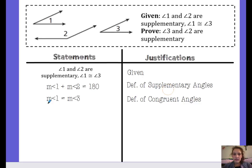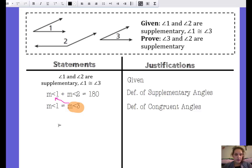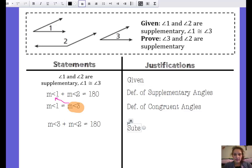Now I know that the measure of angle one is equal to the measure of angle three, so I can substitute the measure of angle three into my first equation in place of the measure of angle one. My next step is: the measure of angle three plus the measure of angle two equals 180. That's substitution.